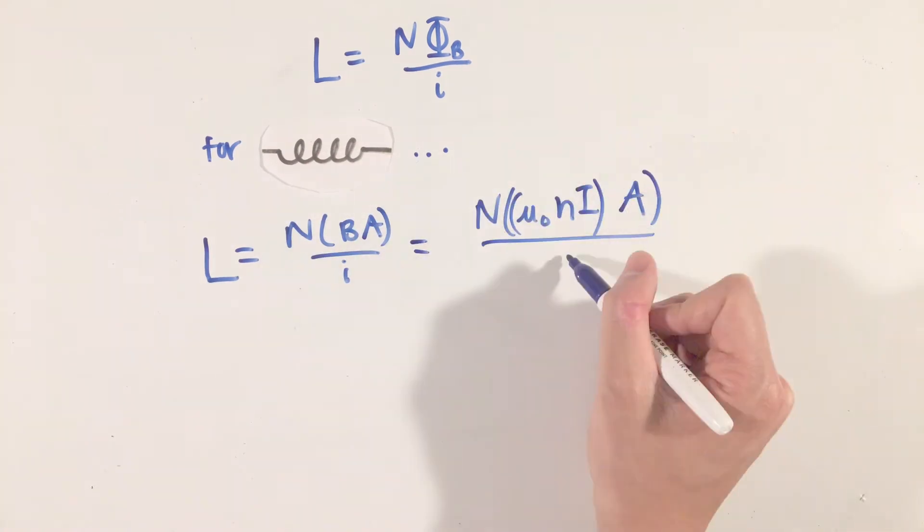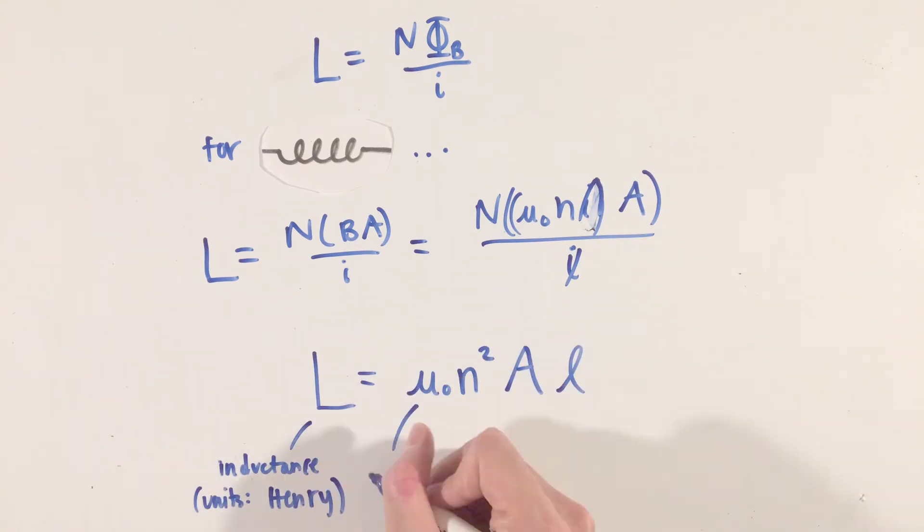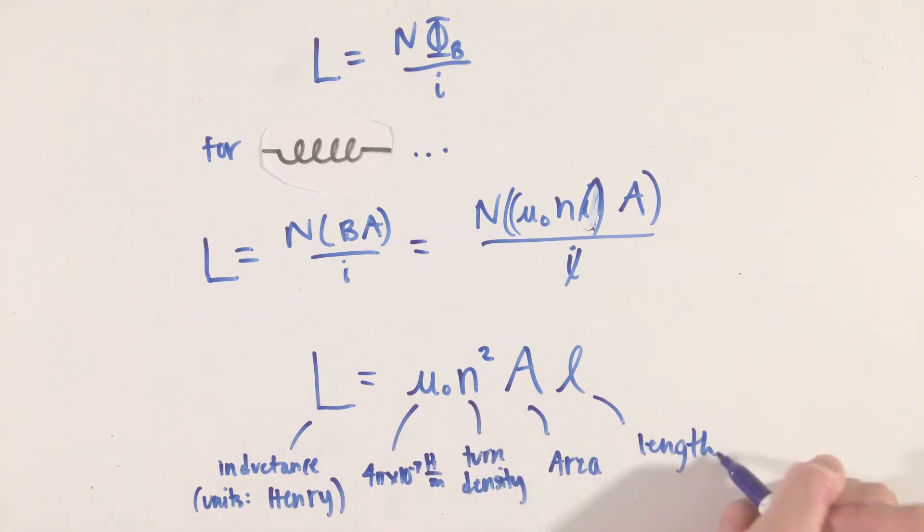However, applying this equation to a solenoid or coil of wire, and realizing that we can calculate the magnetic field inside of a solenoid using Ampere's law, we can arrive at the inductance of a solenoid, where mu nought represents the permeability of free space, a constant with a value of 4 pi times 10 to the negative 7th.